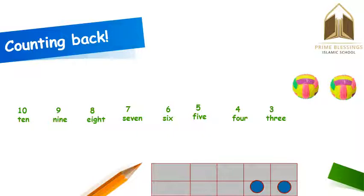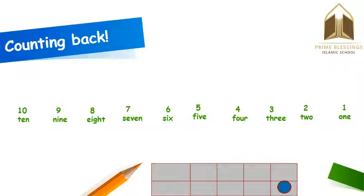If I take one more ball, now how many balls are there? There are two balls. If I take one more ball, now how many balls do you see here? There is only one ball. But if I take this only ball away, now how many balls are there? No ball — that means zero.